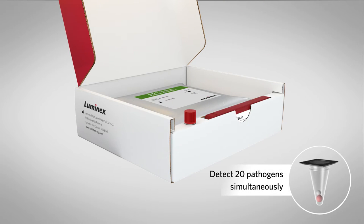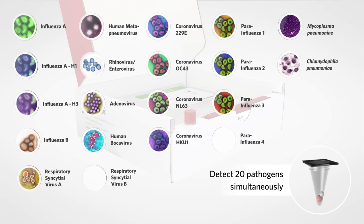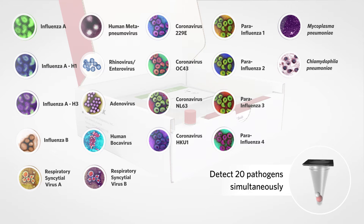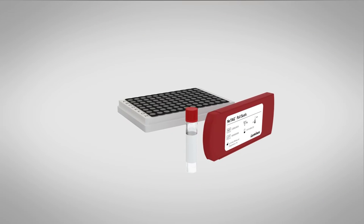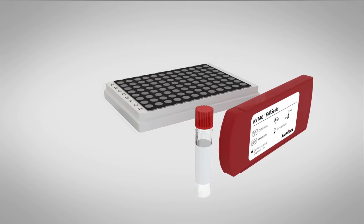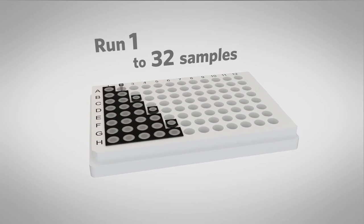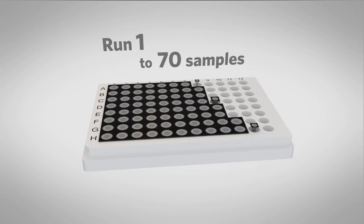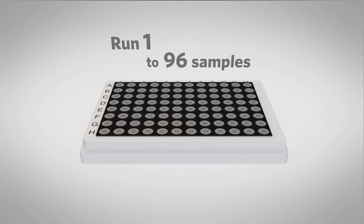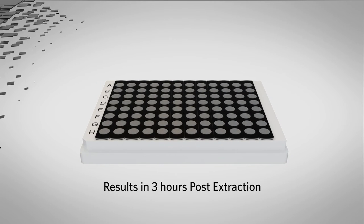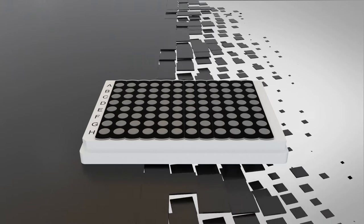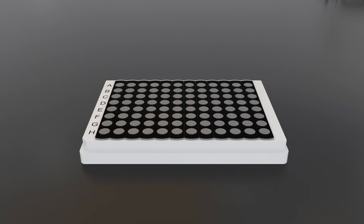The Nextag Respiratory Pathogen Panel includes coverage of 20 actionable targets including both viral and bacterial pathogens, which are tested in lyophilized pre-plated wells that can be separated to run 1 to 96 samples in a single batch. Results are delivered in less than 3 hours post-extraction by following the 3 easy steps of the Nextag Chemistry workflow.